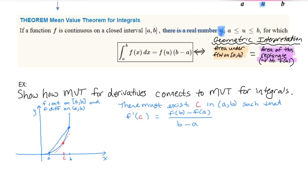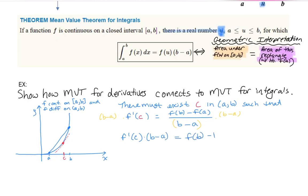Now, how does that get us to the mean value theorem for integrals? One thing I see in common is b minus a, but it's not in the denominator in the integral version. Suppose I multiply both sides to get b minus a out of the denominator. Then I have: f prime of c times b minus a equals f of b minus f of a.